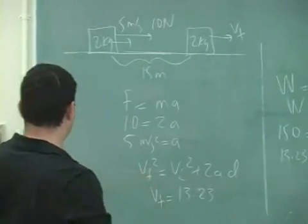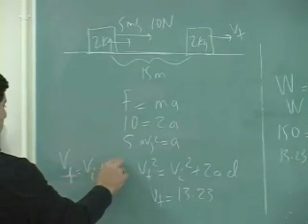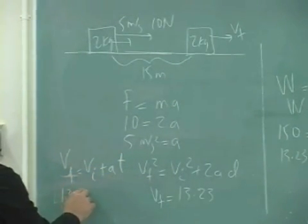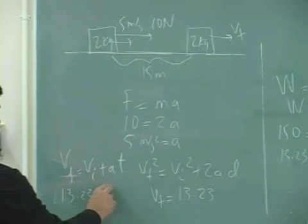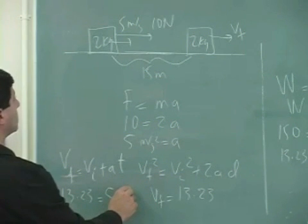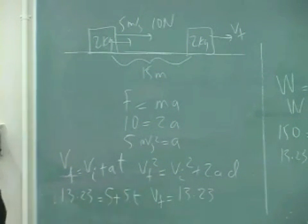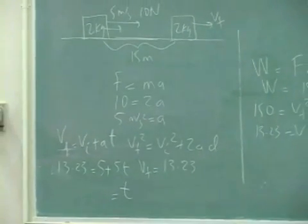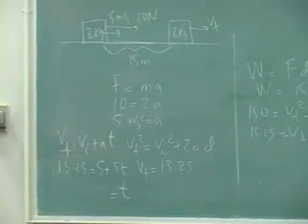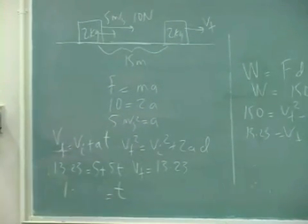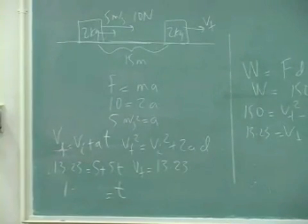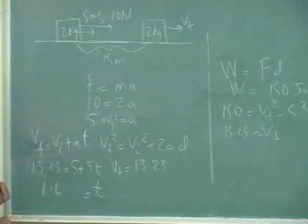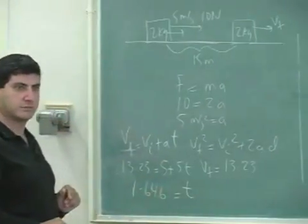What would we get here? V final is V initial plus AT. We would get 13.23 is 5 plus 5T, right? The initial velocity was 5, I believe. And the acceleration was also 5. So what would we get for the T? 13.23 minus 5 is 8.23 divided by 5 would be 1.646. 1.646?